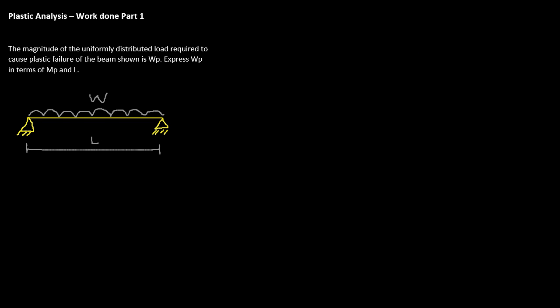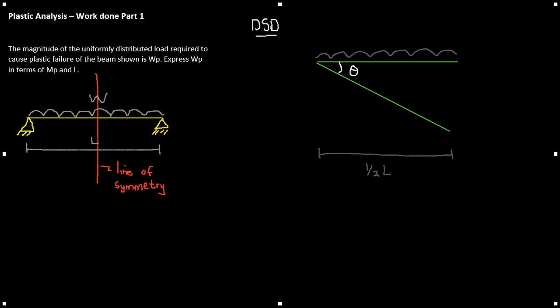The external work, then, is the load times the displacement for each load. There's only one load that we need to concern ourselves with. Let's go back to our deformed shape diagram. We're only going to consider half of this deformed shape diagram because it's symmetrically loaded. Therefore, we can consider half, multiply it by 2 at the end, and then we've considered the whole structure.